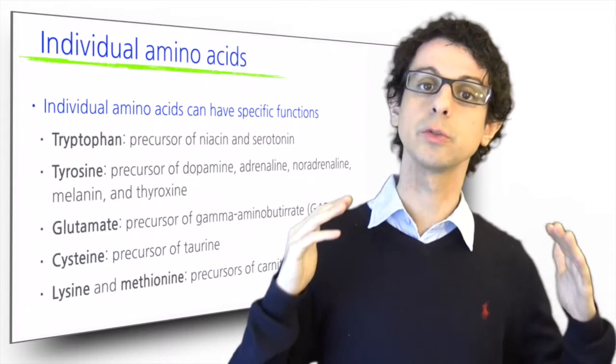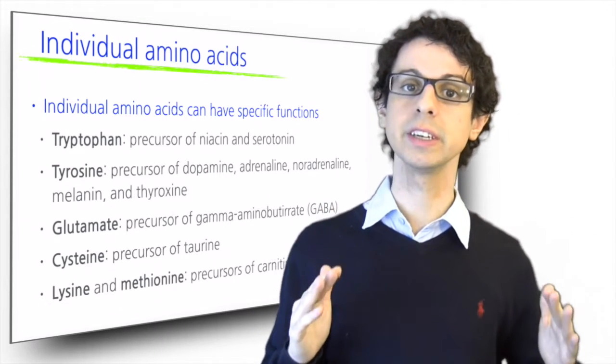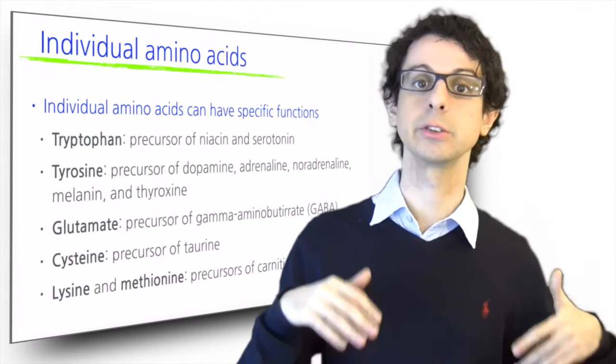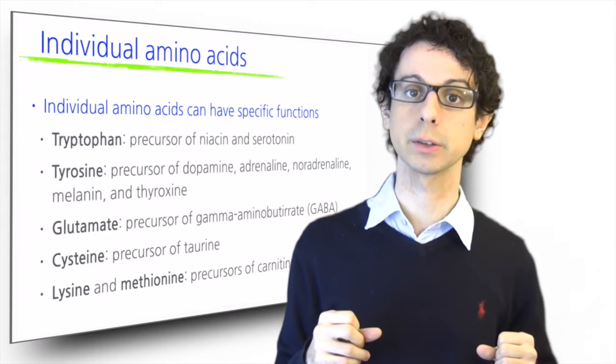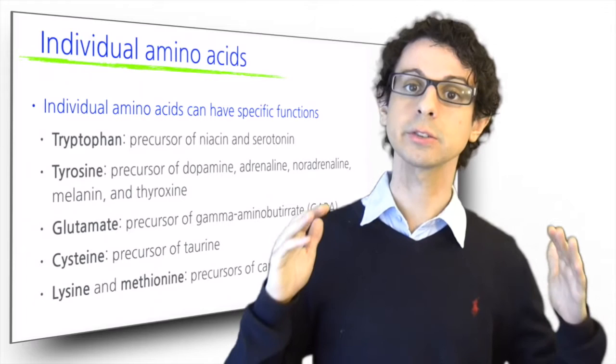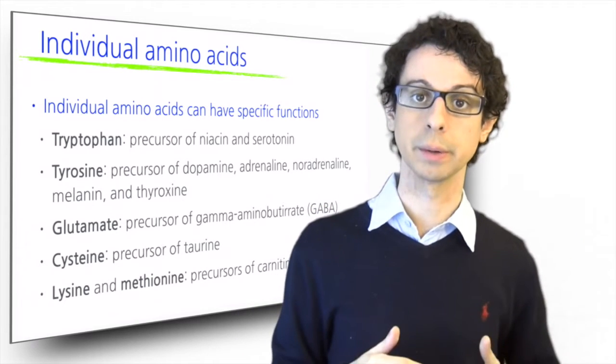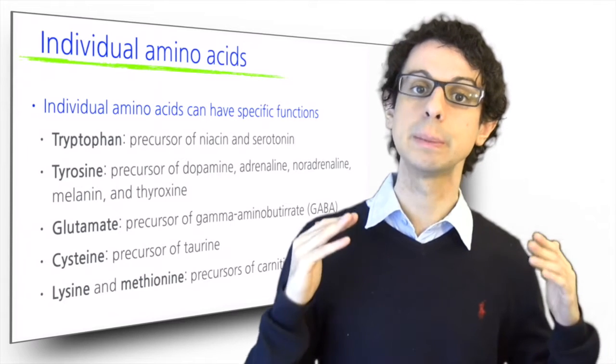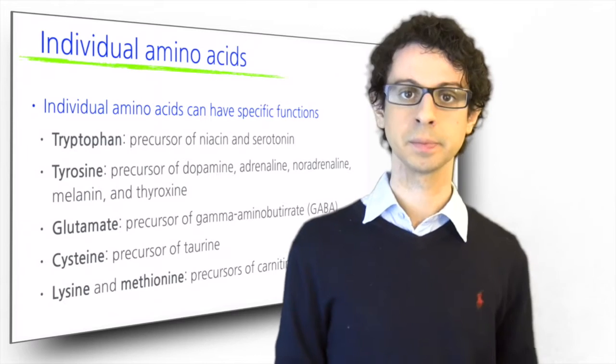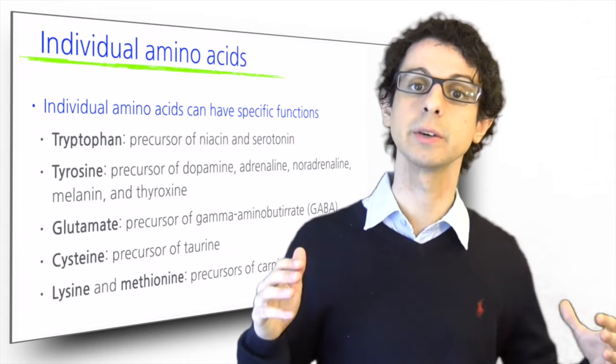On top of their function as part of proteins, individual amino acids may directly intervene in some metabolic pathways on their own, or as starting material to build other important non-protein regulatory molecules. For example, the amino acid tryptophan is precursor of the vitamin niacin, and of the neurotransmitter serotonin. And for this reason, it has been marketed as an individual supplement for pain, depression, or insomnia.